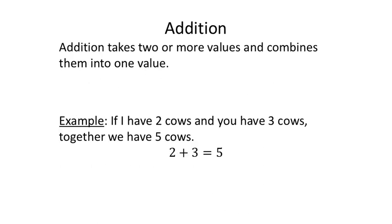Addition is really just a simplified form of counting. Like the example shown here — if I have two cows and you have three cows, how many cows do we have if we combine them? You could count them all in a field. But if we know how to add, which is taking two or more values and combining them, we just know that two cows and three cows is five. We don't end up with five-headed cows — we just add them together.